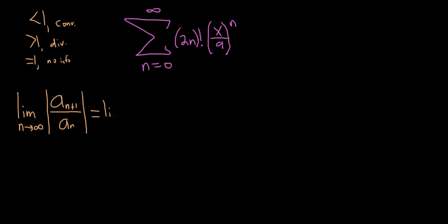So this is equal to the limit as n goes to infinity of the absolute value. Now we're going to replace all of the n's with n plus 1's. So here we have 2n factorial. When you replace your n with n plus 1, you get 2 times n plus 1 and then factorial. So you distribute the 2 and that becomes 2n plus 2 factorial. It's a super key step. So this is 2n plus 2 factorial. Then here we have x over 9 to the n plus 1.